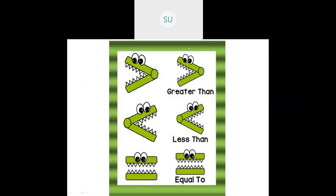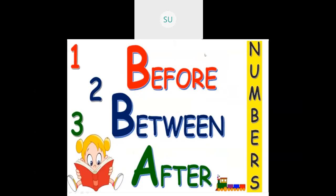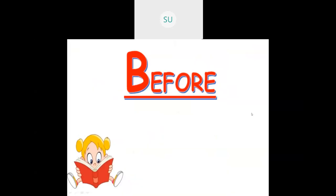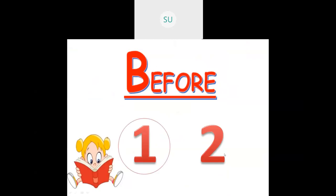So this is what we learnt in learning 0 and comparing numbers. Now let's see the meaning of before, between, after, then ascending order and descending order. Before means the number that comes first. Here I have two numbers: 1 and 2. Which number comes first? 1 comes first. That means 1 comes before 2.